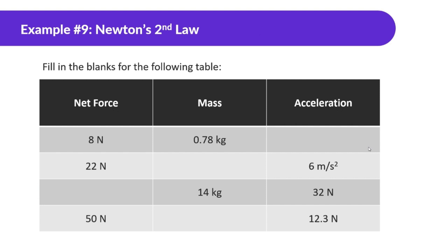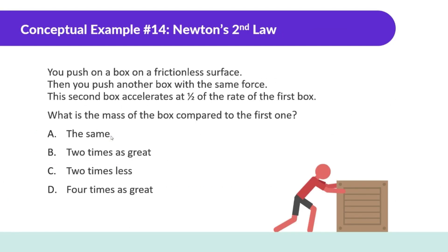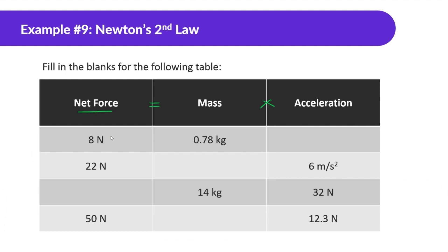Let's fill in the blanks for the table. Net force equals mass times acceleration. For the first row: 8 equals mass times acceleration, so acceleration equals force divided by mass — 8 divided by 0.78 — giving approximately 10.26 meters per second squared.